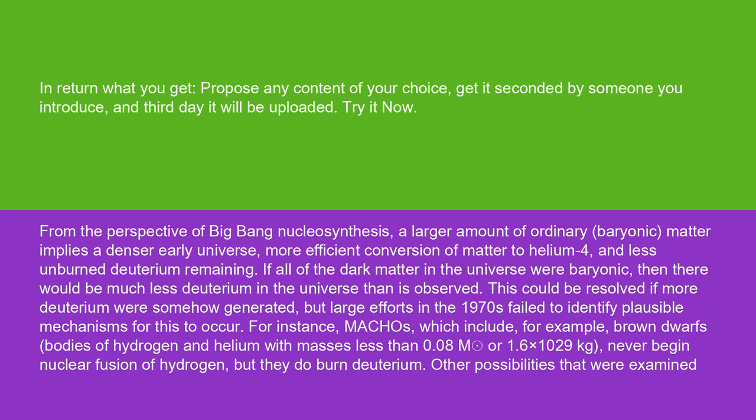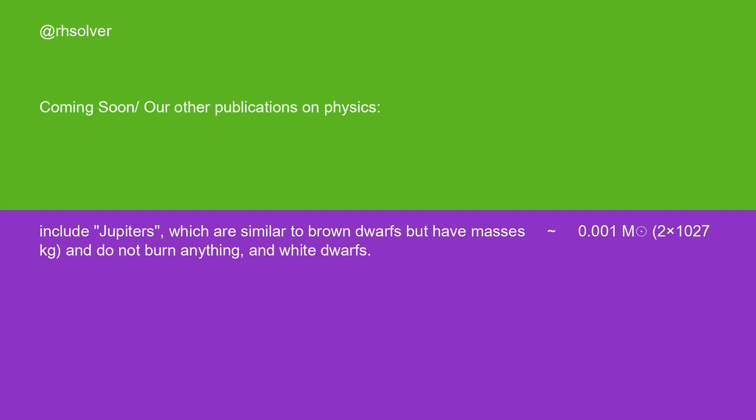This could be resolved if more deuterium were somehow generated, but large efforts in the 1970s failed to identify plausible mechanisms for this to occur. For instance, MACHOs — which include, for example, brown dwarfs, bodies of hydrogen and helium with masses less than 0.08 solar masses (1.6 × 10²⁹ kg) — never begin nuclear fusion of hydrogen, but they do burn deuterium. Other possibilities examined include Jupiters, which are similar to brown dwarfs but have masses below 0.001 solar masses (2 × 10²⁷ kg), and do not burn anything, and white dwarfs.